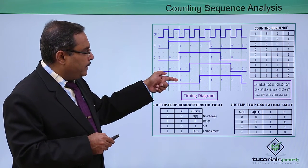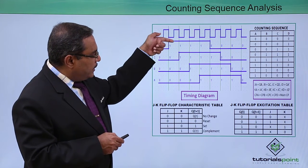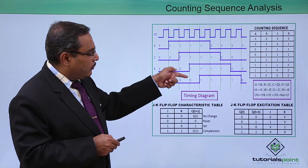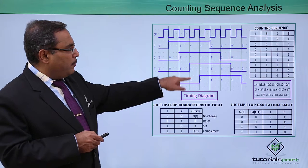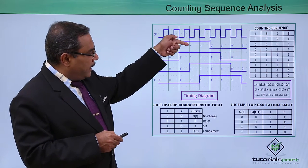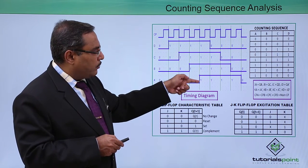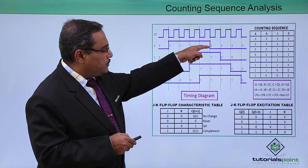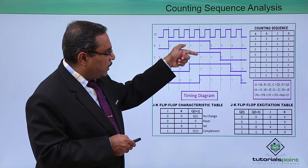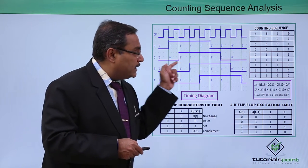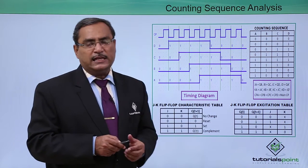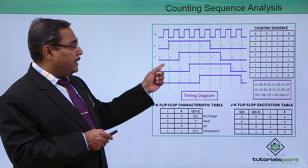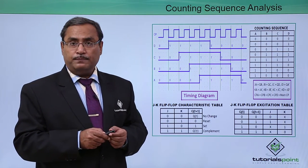0 complement is 1, so 1 is going there and 1 1 0 is coming down. 0 0 will be complemented here and 1 1 1 will be coming down. This 1 will be complemented here, so 0 and this 1 1 1 will be coming down, and this process is maintained. This is the timing diagram of the Johnson counter.